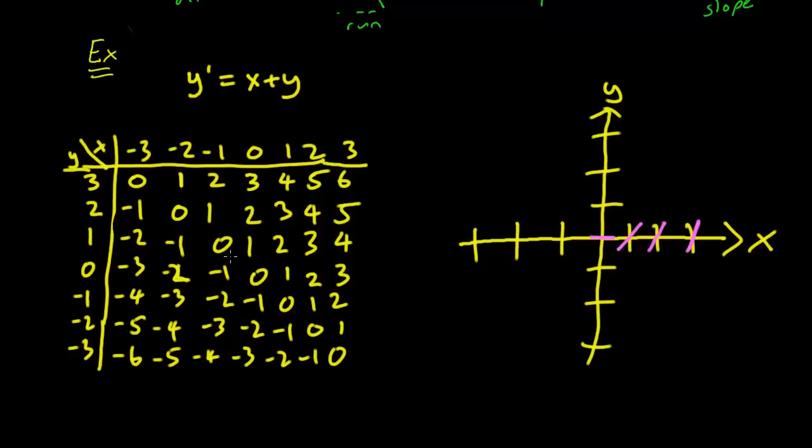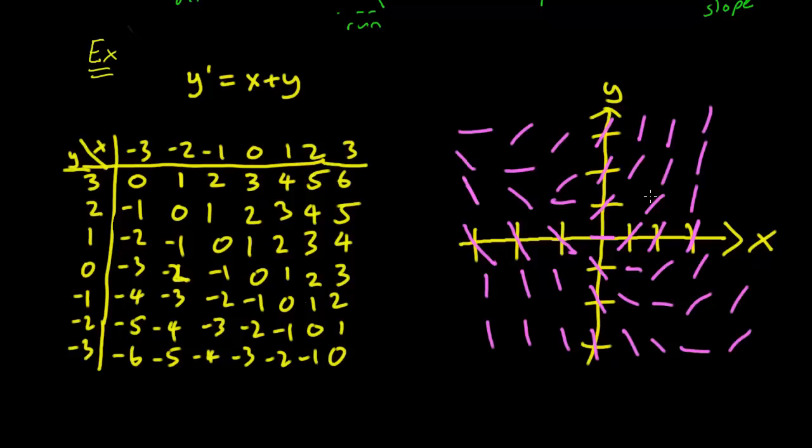When x is minus 1 and y is 0, we get a downward curve of slope 1. When x is minus 2 and y is 0, we get a steeper downward curve. And when x is minus 3 and y is 0, we get an even steeper downward curve. We can fill out the whole graph this way. And this is our slope field.